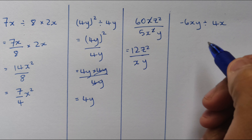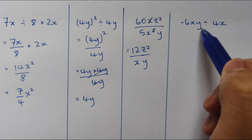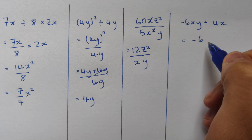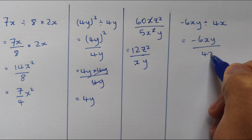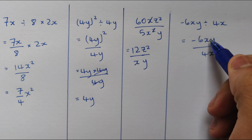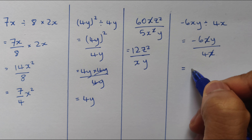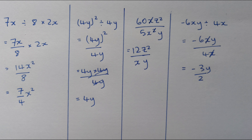Last example: I'll write it in fraction form — minus 6xy divided by 4x. The x on top and the x on the bottom cancel out, leaving me with minus 6y over 4, which simplifies to minus 3y over 2. And there we have it. Thanks for watching — I hope you learned how to multiply and divide algebraic expressions!